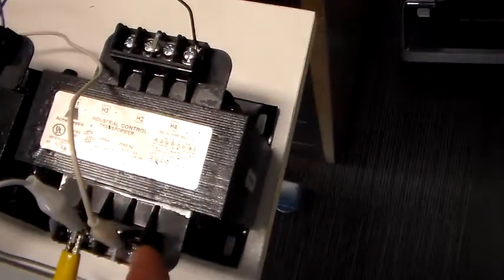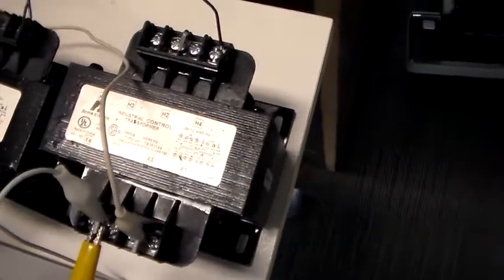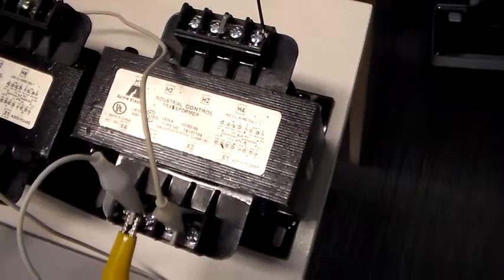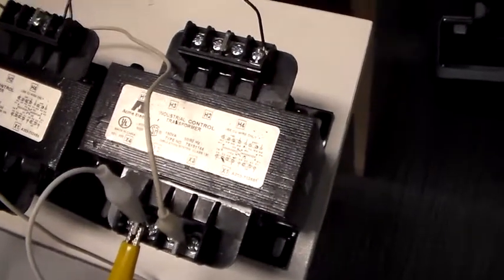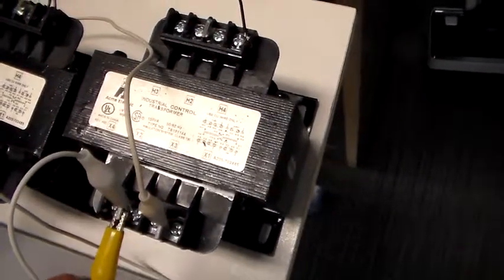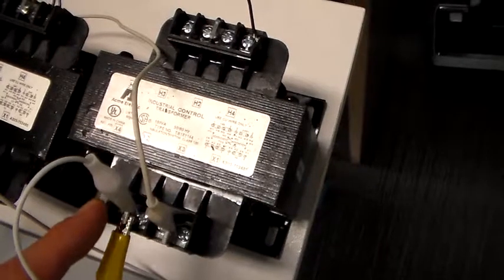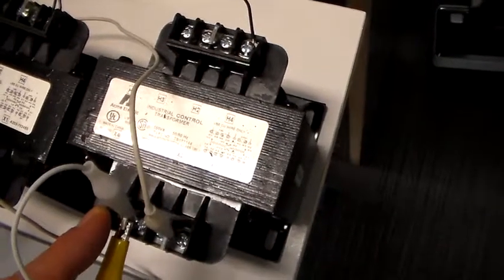Realistically, though, the ratio of this transformer, the turns ratio, is not quite 20 to 1. The reason for that is when they design power transformers like this, they design them such that they will output the rated voltage on their low voltage side under load.